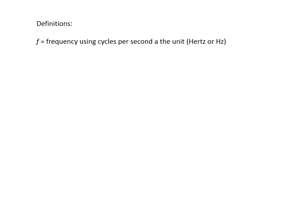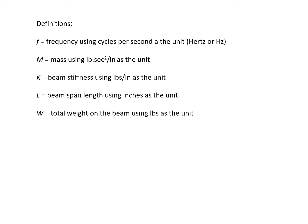Let's look at some definitions. We use little f for frequency in hertz. M is the mass. K is the beam stiffness in pounds per inch. L is the span length of the beam. We use inches. W is the total weight on the beam in pounds.